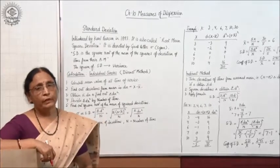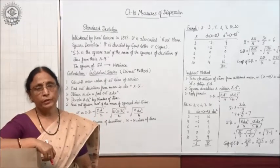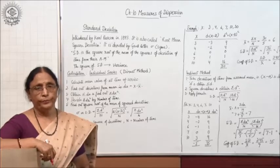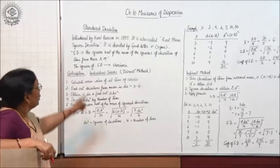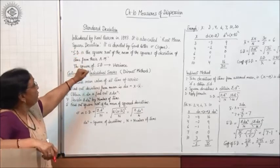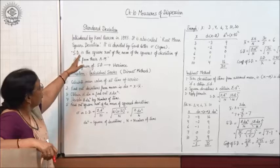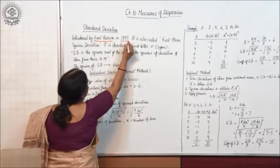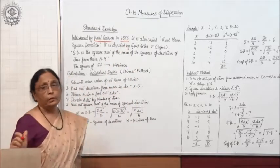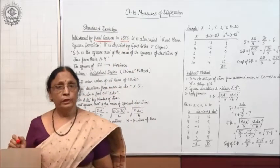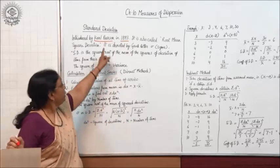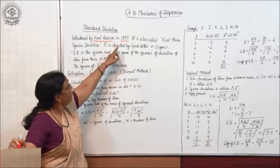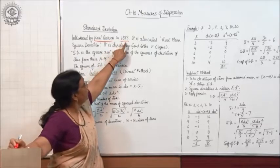Children, today we learn another measure of dispersion which is known as standard deviation. What is standard deviation? Standard deviation was introduced by Carl Pearson in 1893. He was the economist, Carl Pearson, and he introduced this concept of standard deviation in 1893.